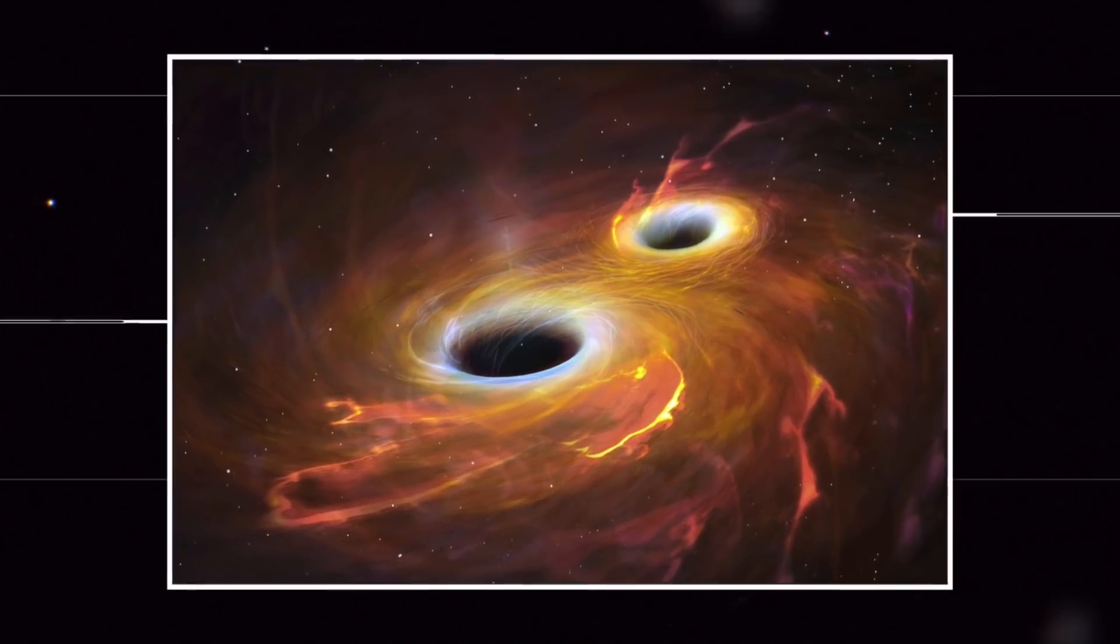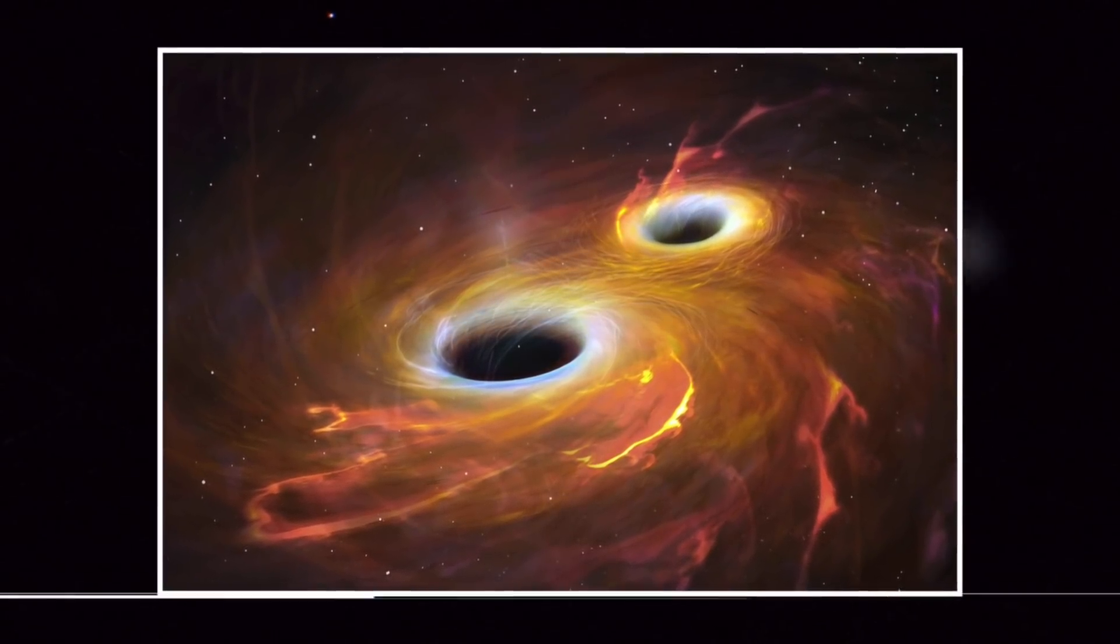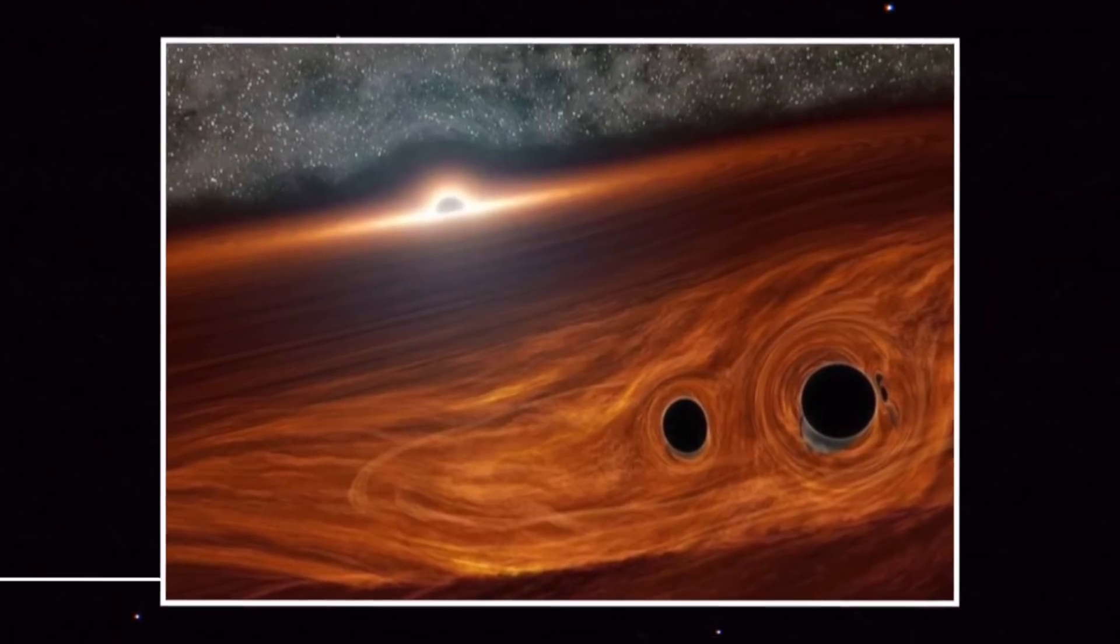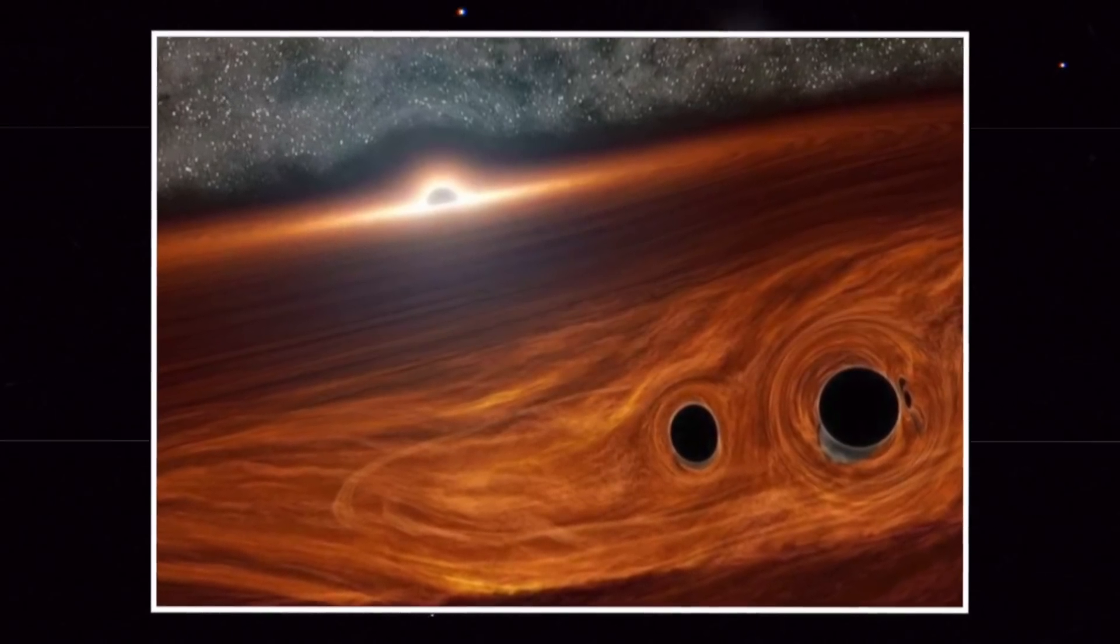Each about the size of a proton, these tiny ancient black holes would be difficult to see but would have a strong gravitational pull on other objects, which is one of dark matter's two known properties.